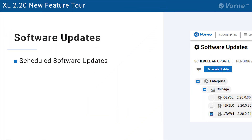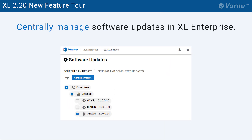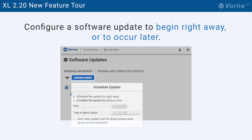The next feature, which is related to software updates, is a big one. You can now centrally manage software updates in Excel Enterprise for any number of Excel devices, as long as they're running version 2.19 or later. You can configure a software update to begin right away or to occur later at a time of your choosing. And in either case, you can also specify that the update not start for a given Excel device until production is not scheduled.